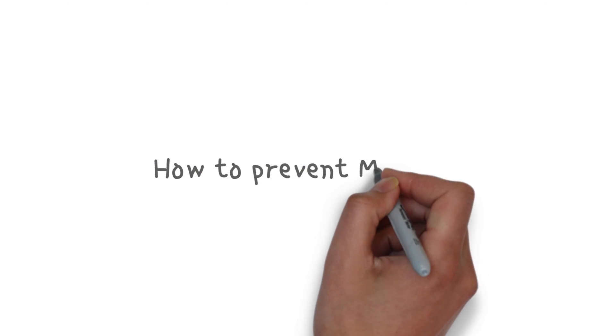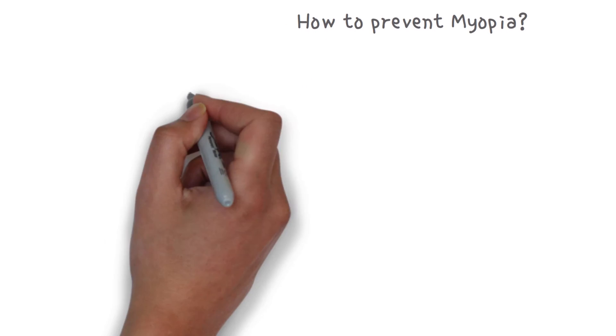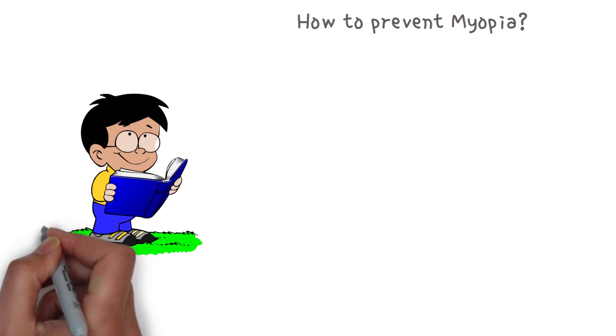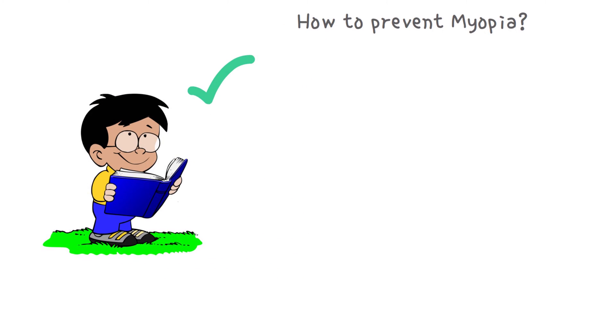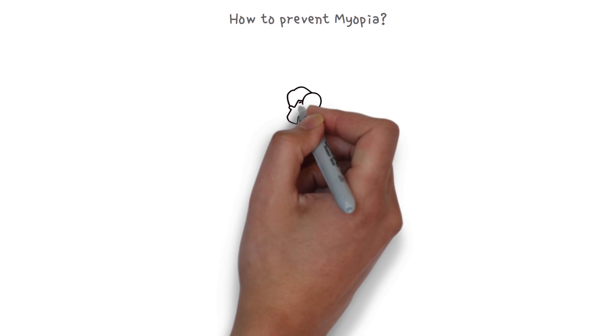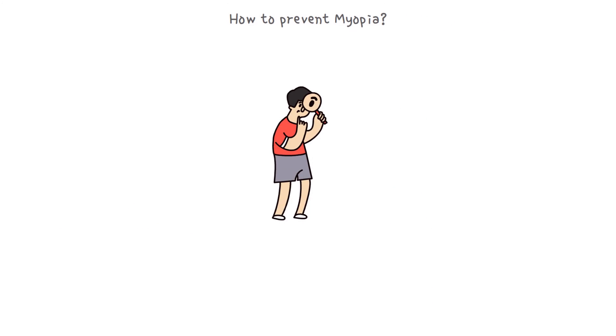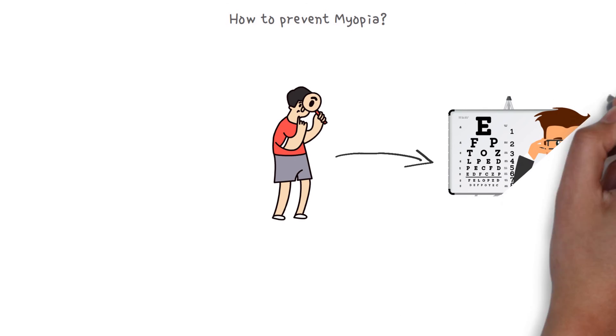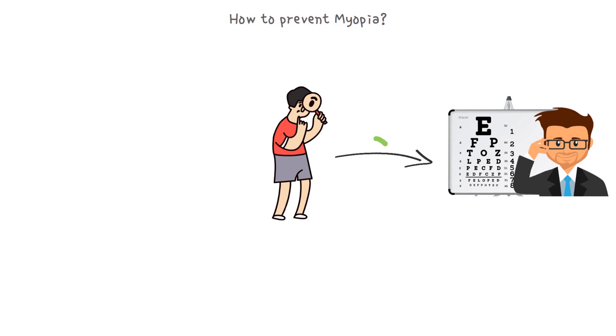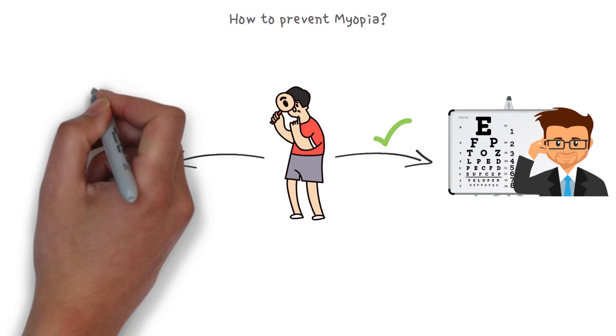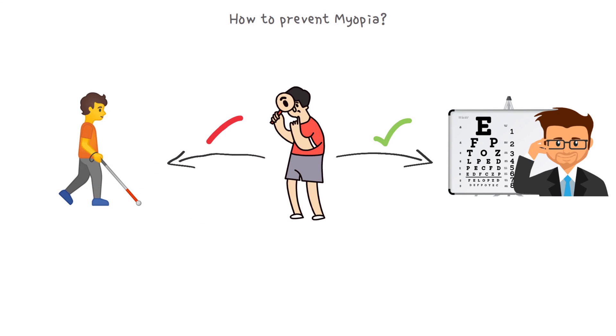How to prevent myopia? In most cases, myopia does not cause any further health problems. For those who have more severe forms of myopia, it is important that they tell their optometrist about any changes in their vision. Without treatment, they could be at risk of developing additional eye problems or even vision loss.